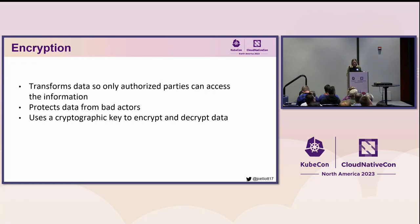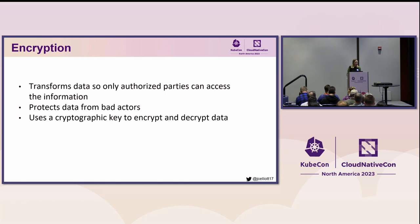Simply put, encryption is the process of transforming information in such a way that only authorized parties can access it. Without encryption, some bad actor with access to your network could obtain and read your data, which is not desirable. Encryption leverages cryptographic keys to encrypt and decrypt your data.